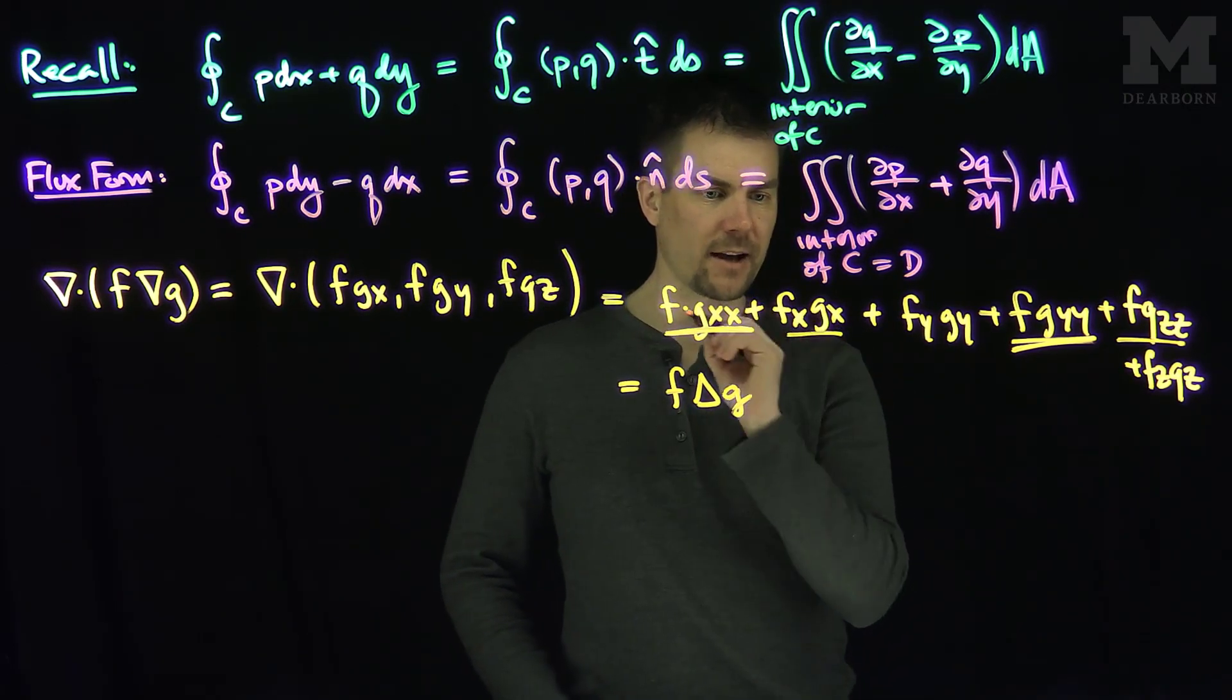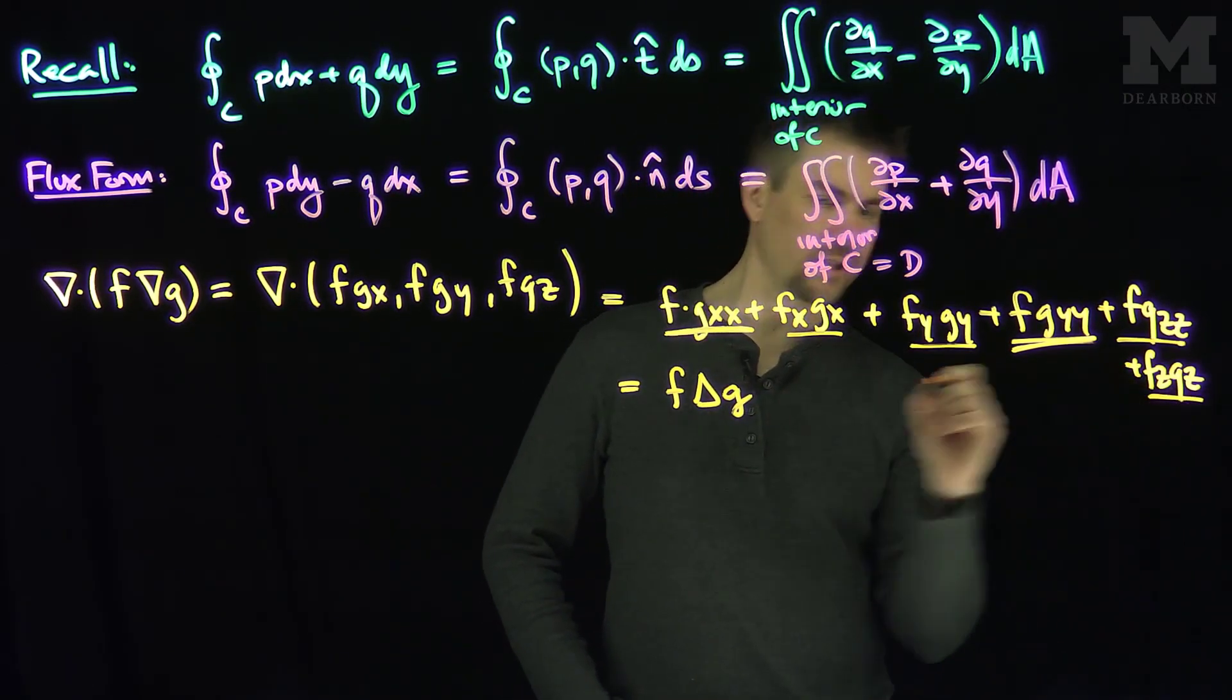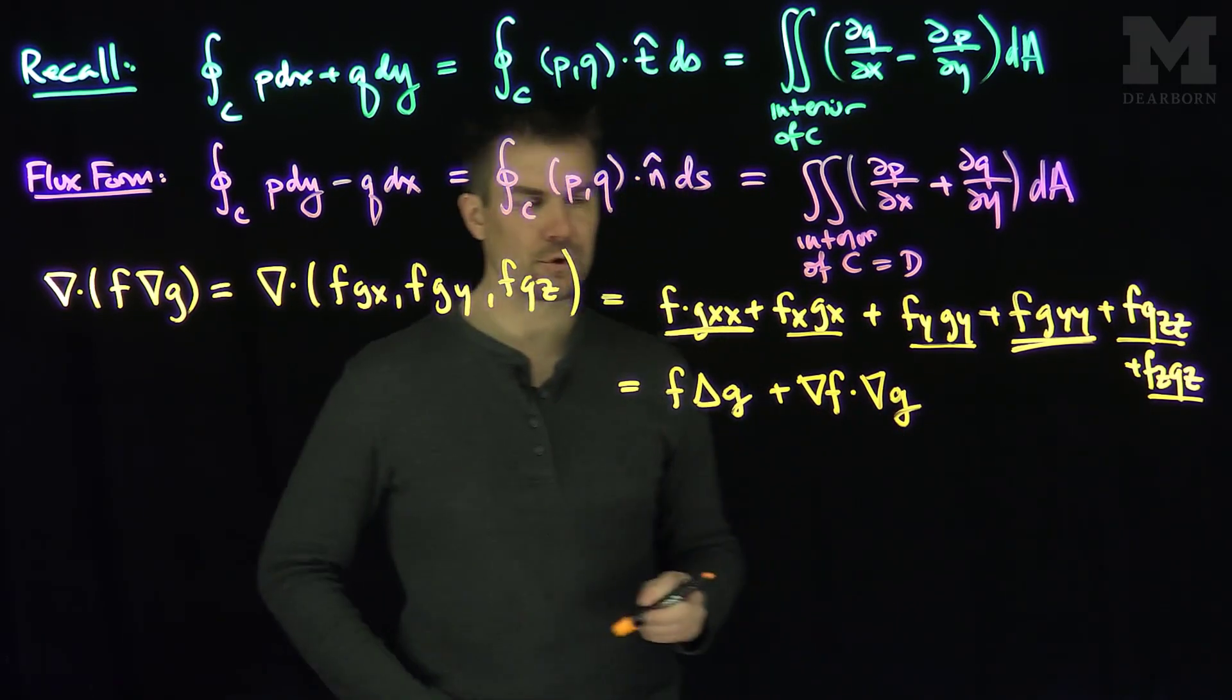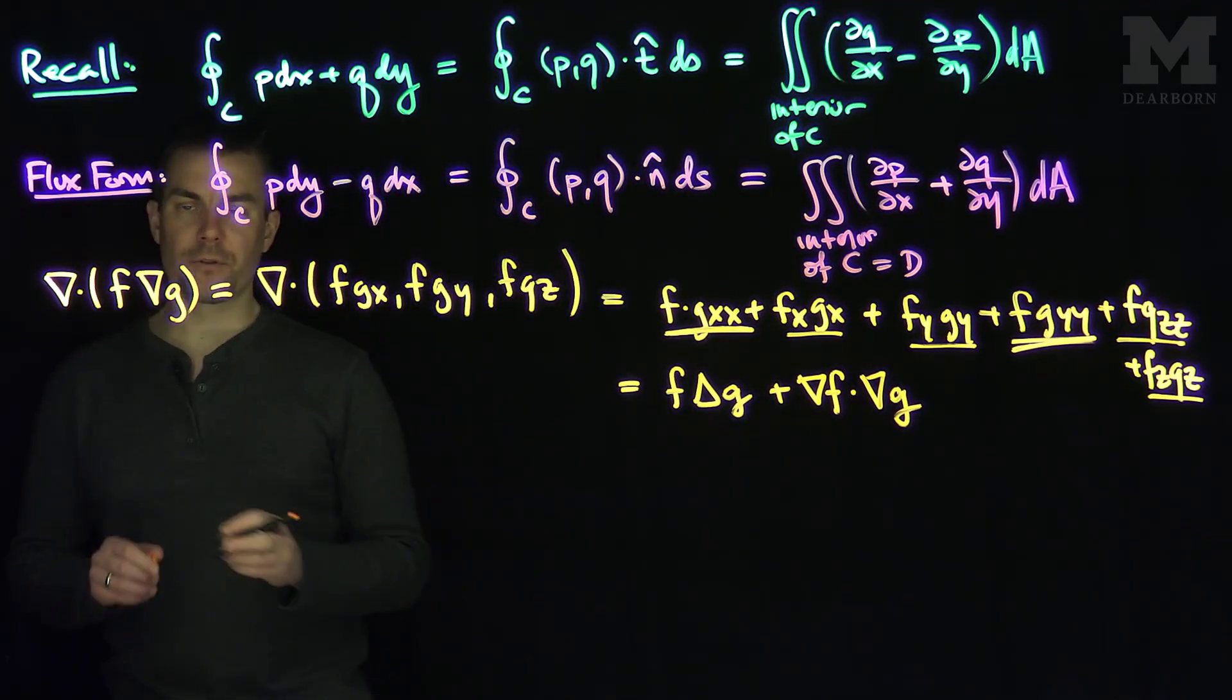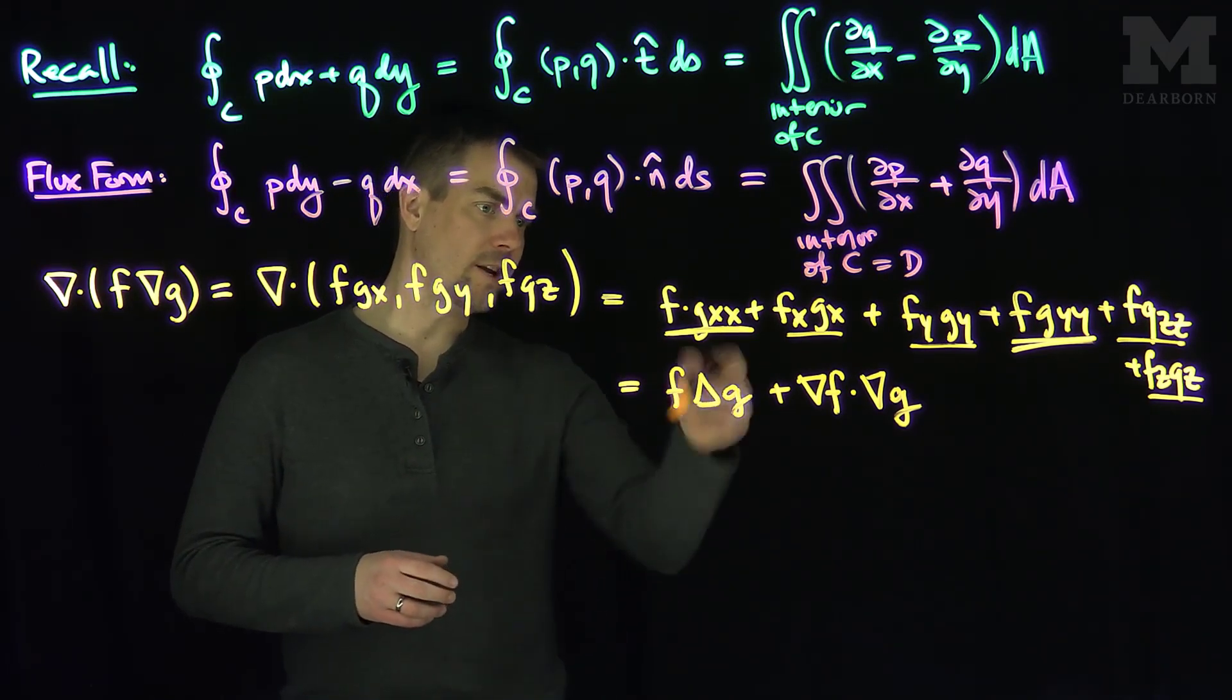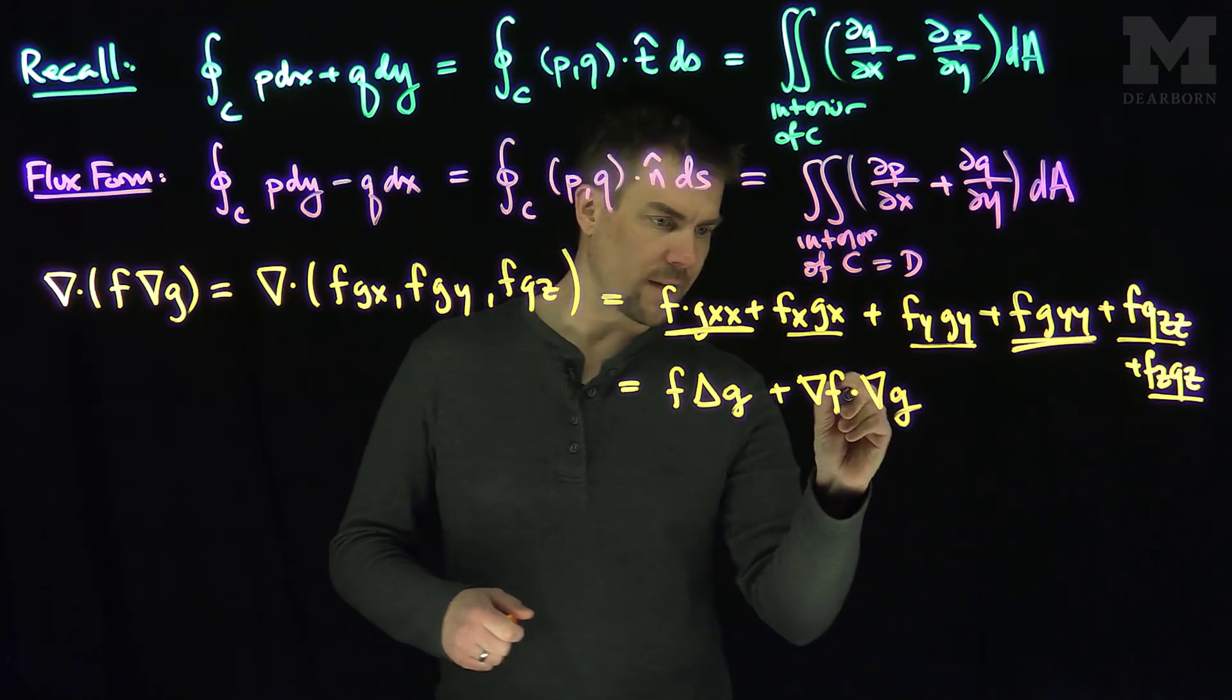And by gathering these terms, this term, this term, and this term, those terms are f Laplacian of g. And then what's left is fx gx, fy gy, fz gz. That's just the gradient of f dot the gradient of g.